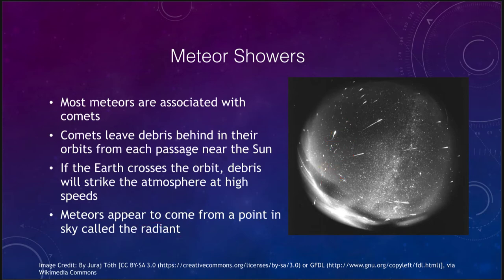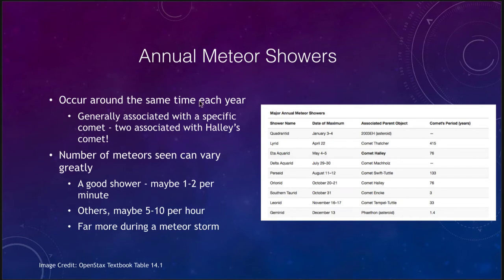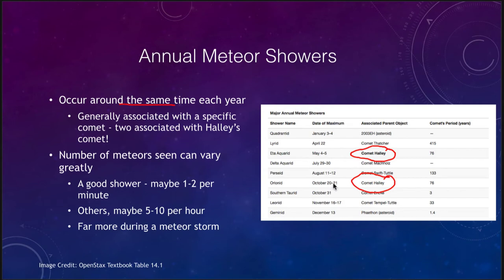Meteor showers occur on a regular basis, and there are annual meteor showers that occur around the same time each year. Two of the better-known ones are actually associated with Halley's Comet, occurring in May and then again in October — about six months apart — when we pass through those two portions of Halley's Comet's orbit. At this time, Halley's Comet is nowhere near the inner solar system, but we still see those showers because we are passing through debris left behind, possibly hundreds or thousands of years ago.